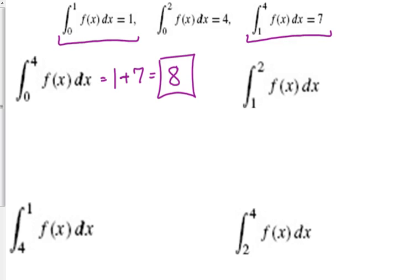Now, the next one, from 1 to 2. I kind of need a little bit of a visual for this one. So I've got 0, 1, and 2. I know from 0 to 1, it's 1. From 0 to 2, it is 4. So what does that mean it is from 1 to 2? 3.